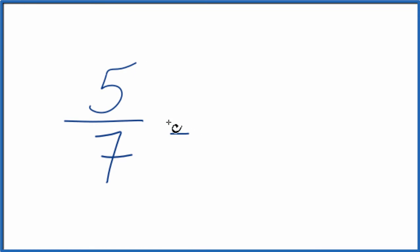That would give us 0.714 and this number actually keeps going for some time. So we're rounding this to 0.714. So the fraction 5 sevenths is equal to 0.714 but this number is rounded.